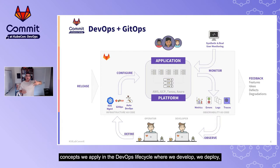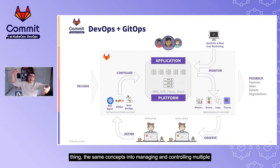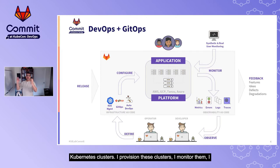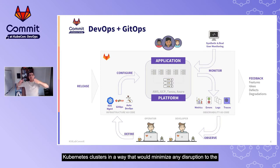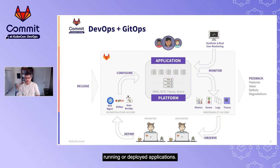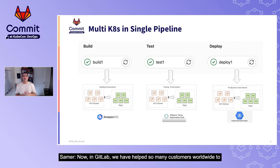The same concepts we apply in the DevOps lifecycle — develop, deploy, monitor, enhance — we want to apply to managing and controlling multiple Kubernetes clusters: provision the clusters, monitor them, ingest logs and metrics, automate actions based on these inputs, and reflect them back to the multiple clusters in a way that minimizes disruption to running deployed applications.